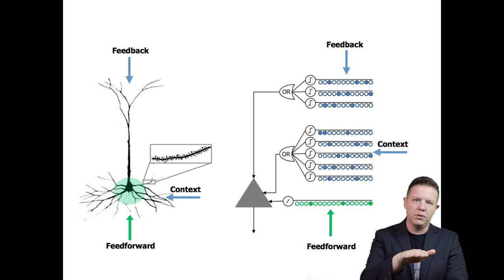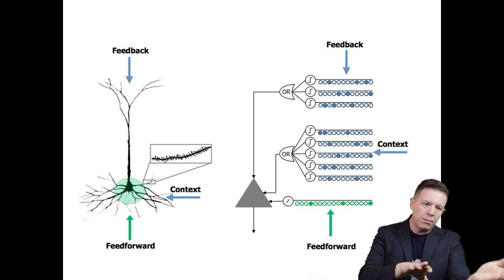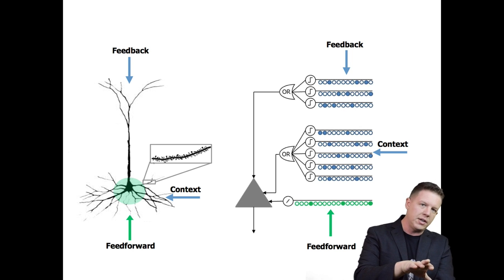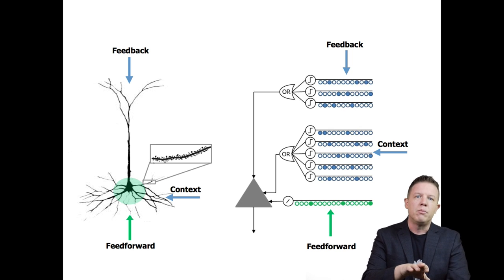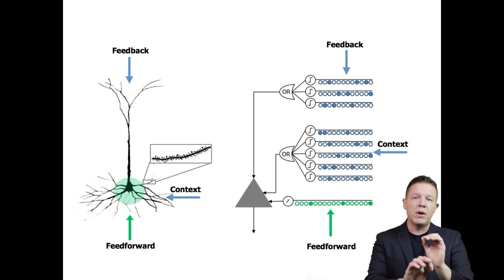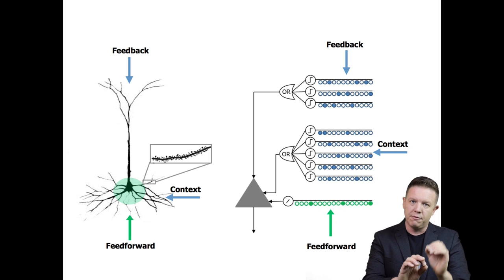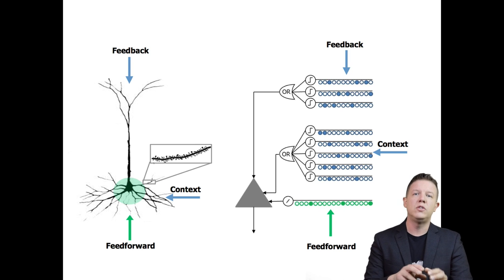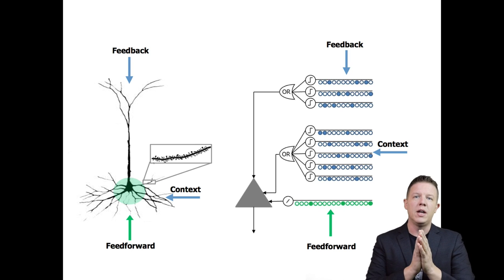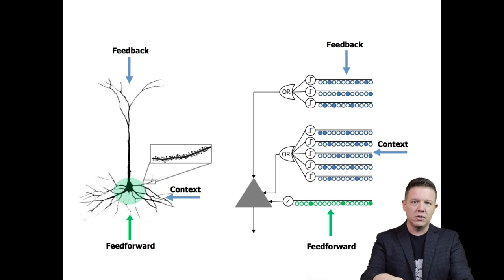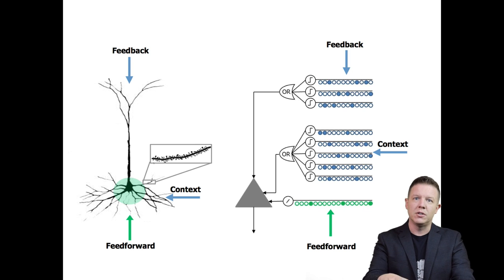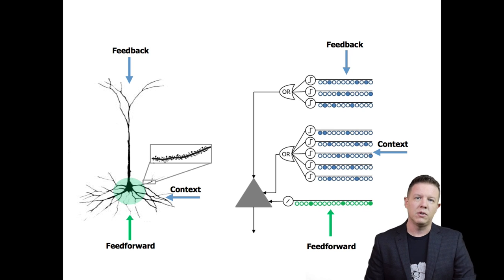And if any one of those, summed across all the synapses, breach some threshold — which is configurable — then that cell goes into a predictive state based upon its contextual connections to the other cells within the structure.